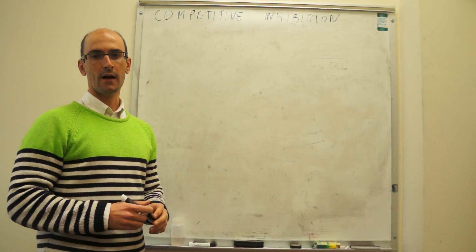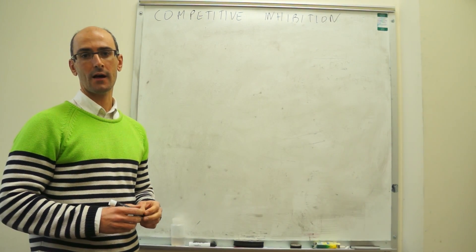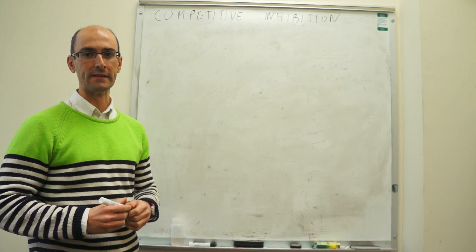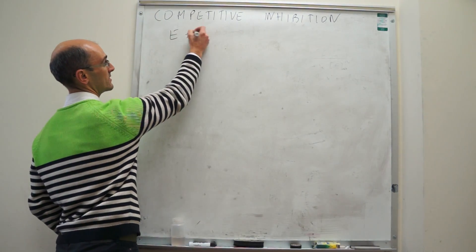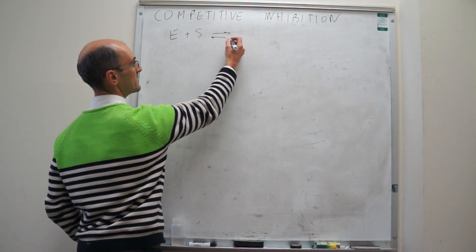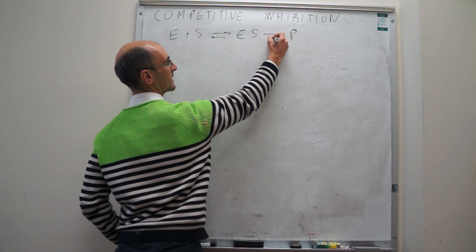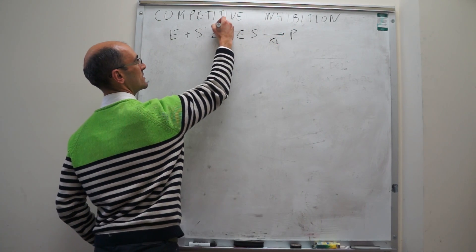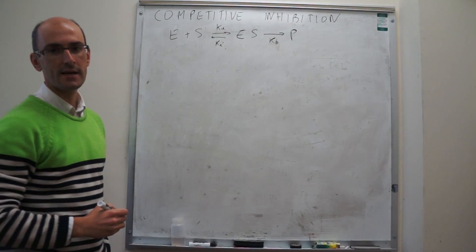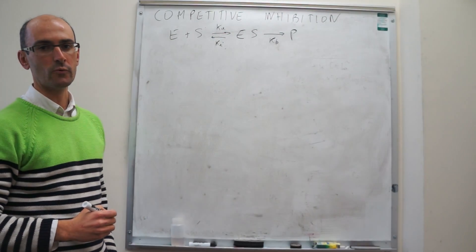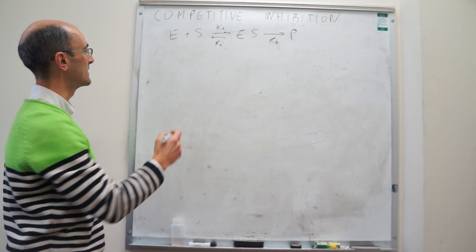In this video I explain how to proceed with competitive inhibition, specifically how to derive the rate law for competitive inhibition. We depart from the standard Michaelis-Menten kinetics mechanism, where these rate constants are K_B, K_A, and K_A prime. Competitive inhibition is that in which the inhibitor competes with the substrate for the active site of the free enzyme.